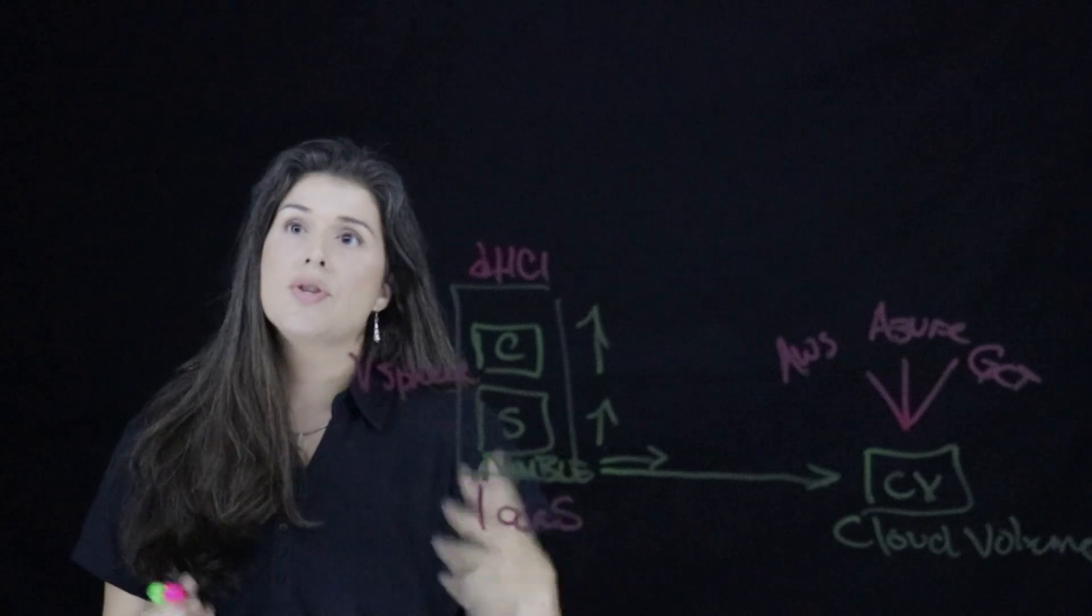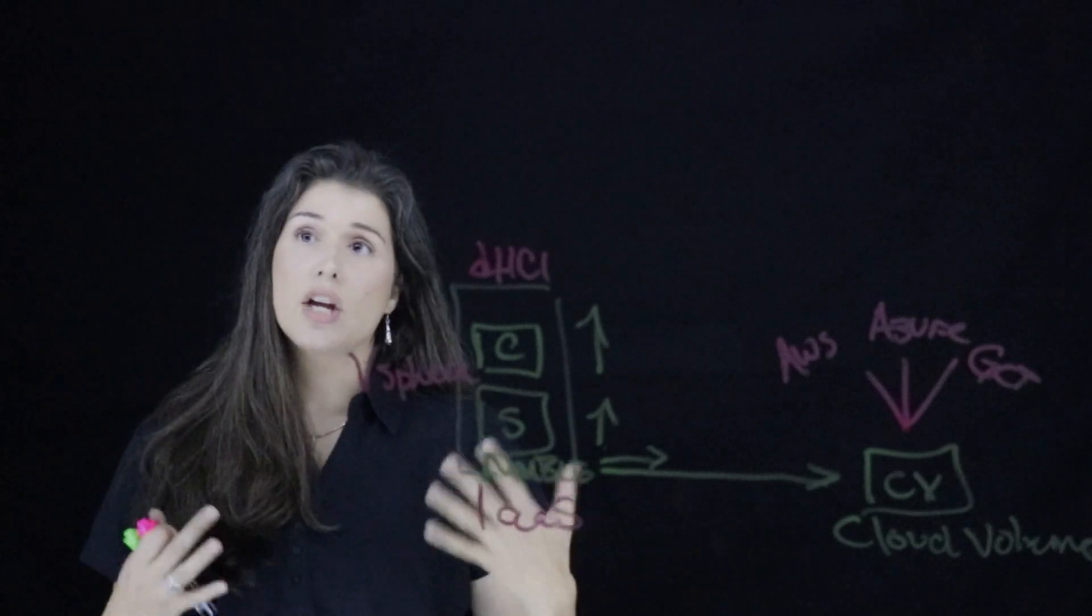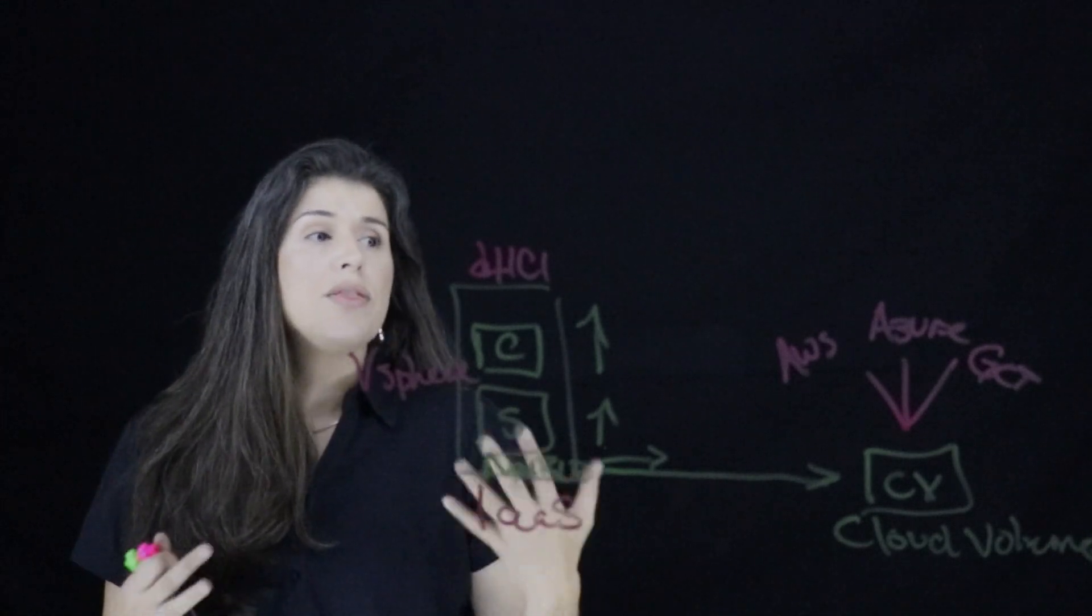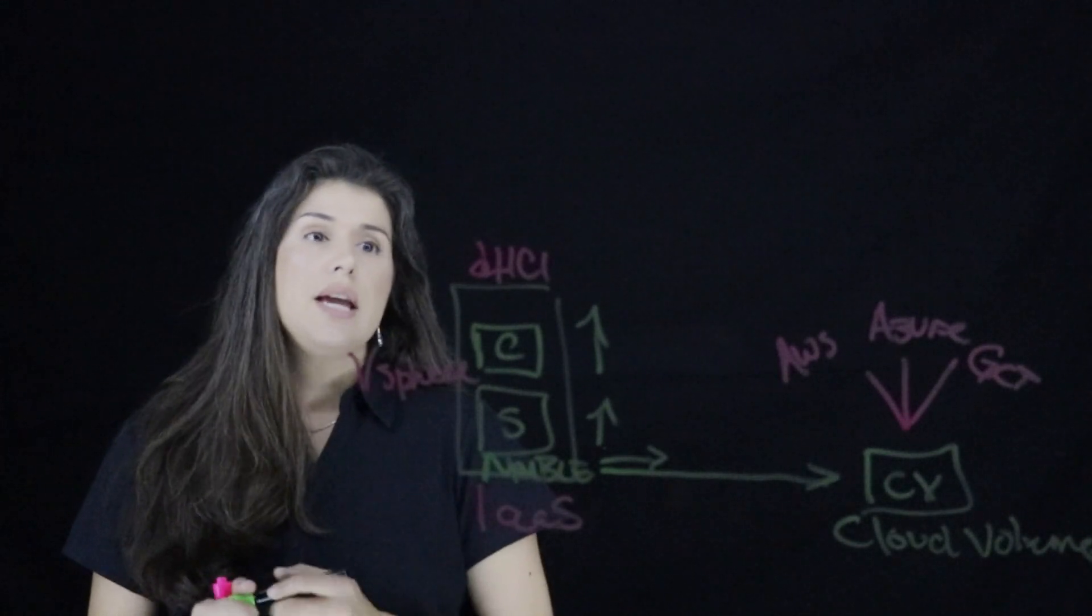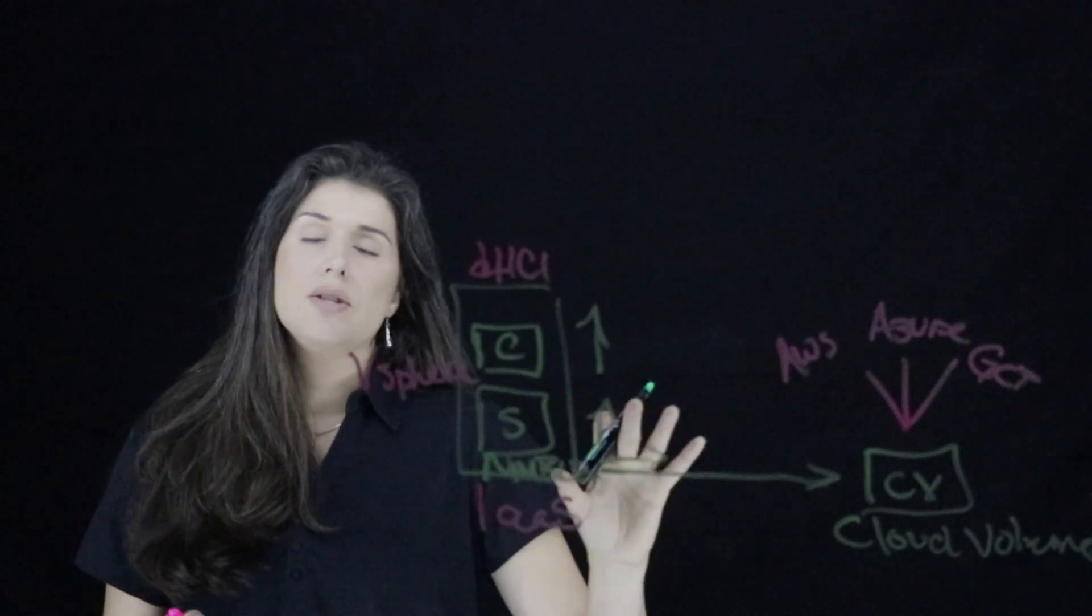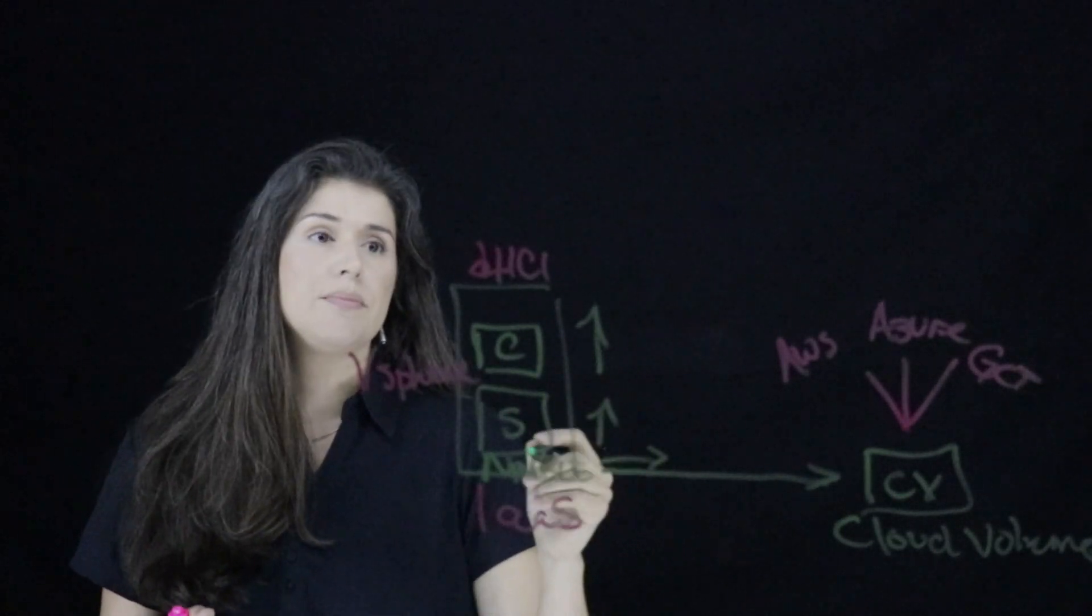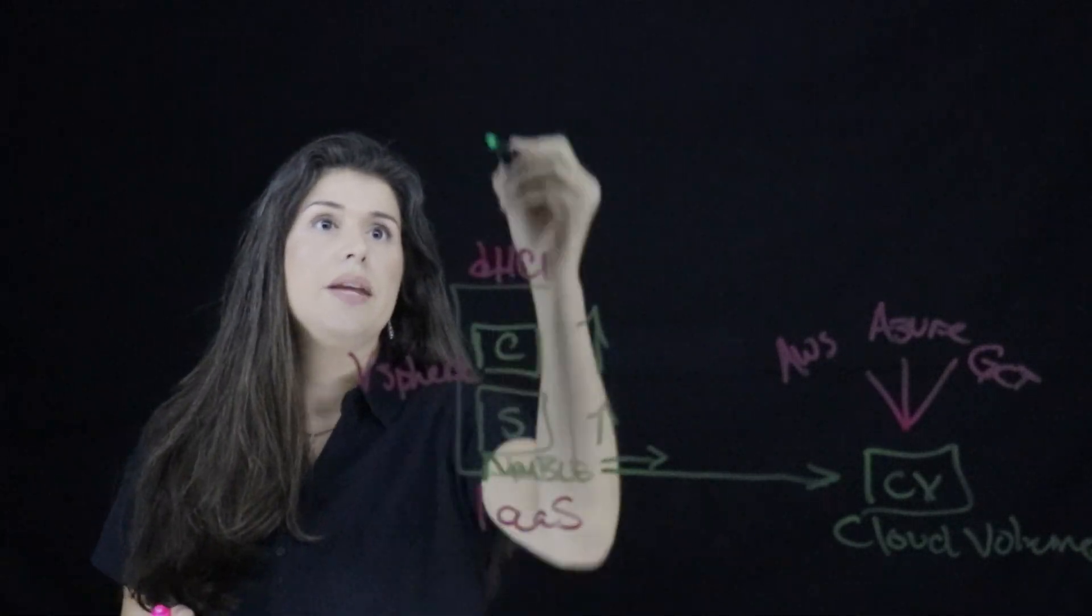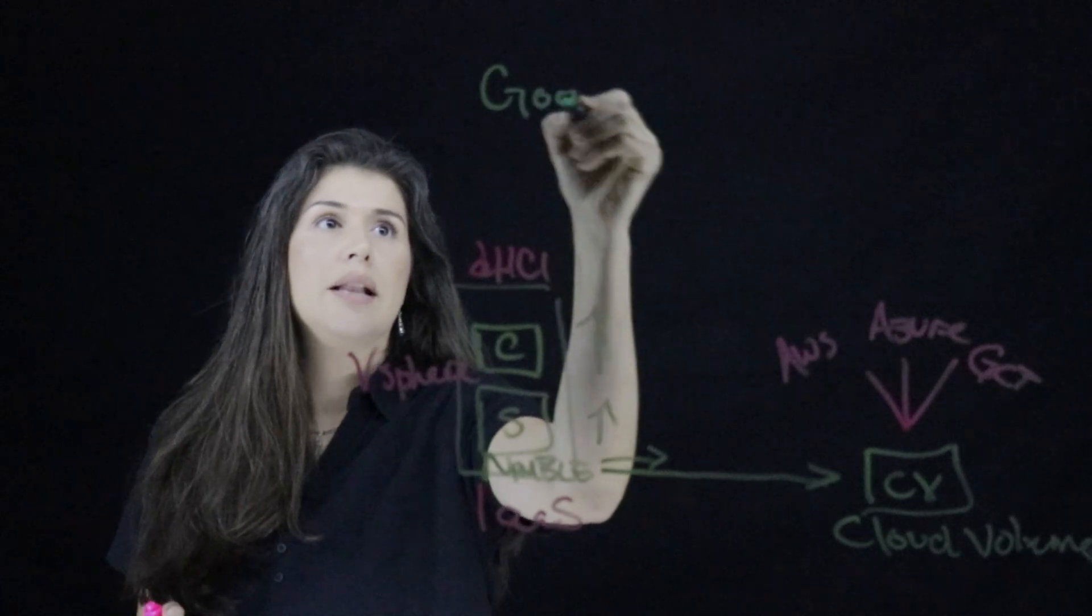So that's the short answer on how we extend DHCI into the cloud. But the powerful story here, and this is what we announced starting at Google Next this year, is our partnership with Google. And with this partnership, what we have done is we have built a true hybrid cloud experience for containers. It starts with DHCI and our validated design for DHCI, and it's leveraging Google Cloud Anthos.